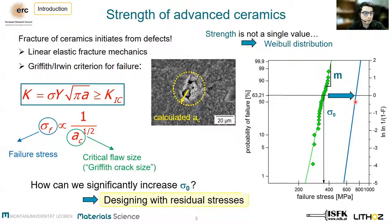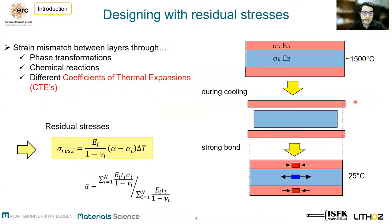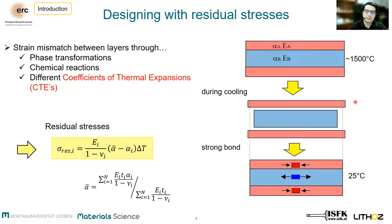So the question is, how can we shift the strength distribution to the right side, or how can we enhance the characteristic strength? One approach would be designing the residual stresses. In cases where dissimilar materials are bonded together and undergo differential shrinkage from sintering temperature, stresses arise within the layers.